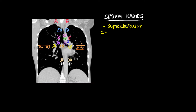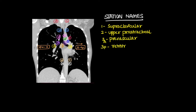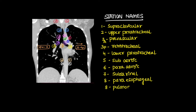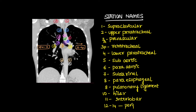Station 1 is supraclavicular. Station 2 is upper paratracheal. Station 3 is prevascular — 3A anterior — and 3 posterior is retrotracheal. Station 4 is lower paratracheal. Station 5 is sub-aortic, previously known as AP window. Station 6 is para-aortic. Station 7 is subcarinal. Station 8 is paraesophageal. Station 9 is pulmonary ligament. Station 10 is the hilar station. Station 11 is the interlobar station. Stations 12 to 14 are the peripheral or intrapulmonary nodes.